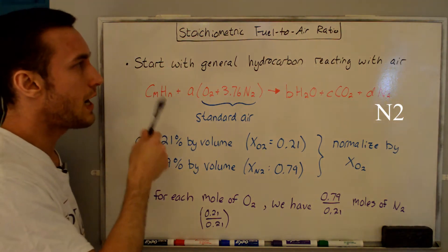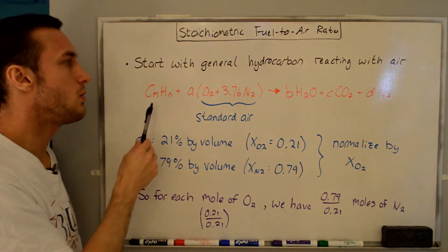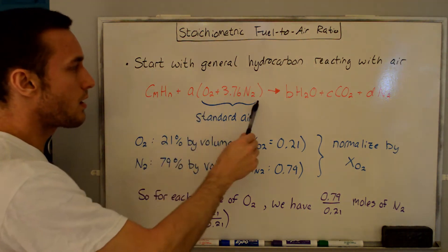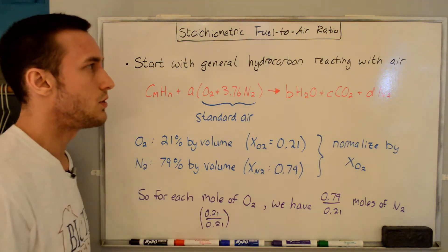I'm going to start with a general case and then I'll go through an example for you with real numbers. We're going to start with a general hydrocarbon reacting with air. The hydrocarbon here is CMHN, where M and N can be any numbers, and it's reacting with air, which I'll talk about in a second. It's reacting to form water, CO2, and N2.